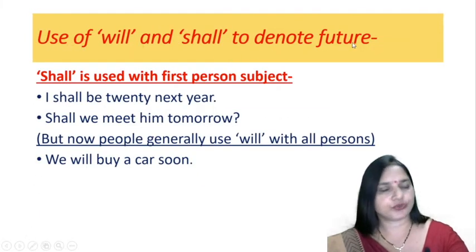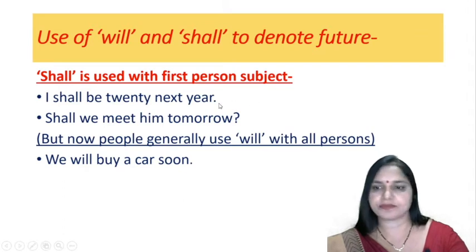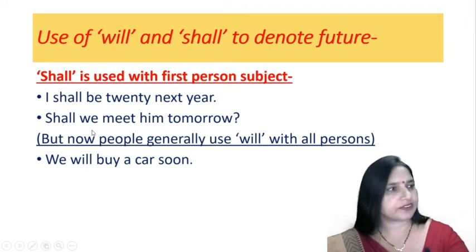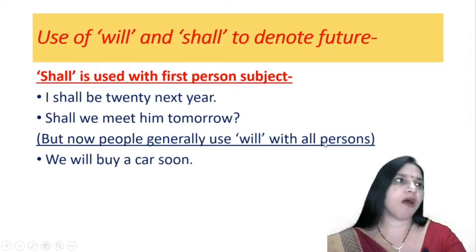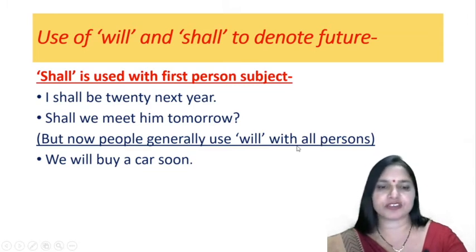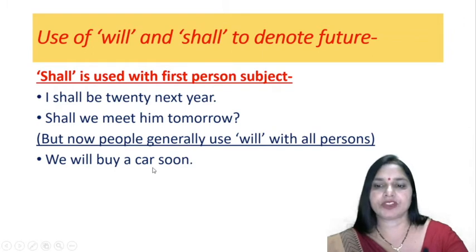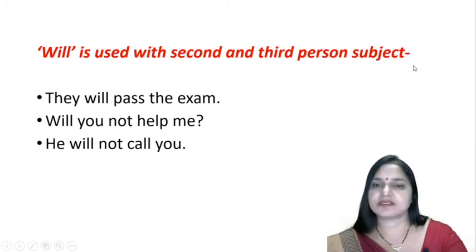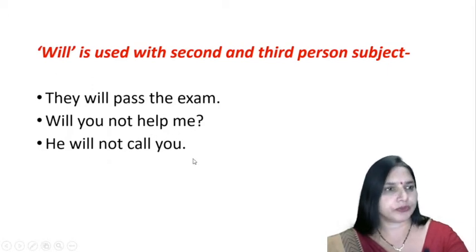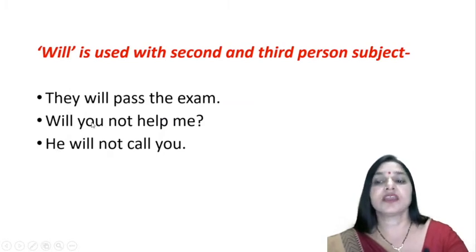Use of will and shall to denote future. We use will and shall to denote future. Shall is used with first person subjects: 'I shall be 20 next year.' 'Shall we meet him tomorrow?' But now people generally use 'will' with all persons — there is a growing tendency to say 'We will buy a car soon.' Will is used with second and third person subjects: 'They will pass the exam.' 'Will you not help me?' 'He will not call you.'